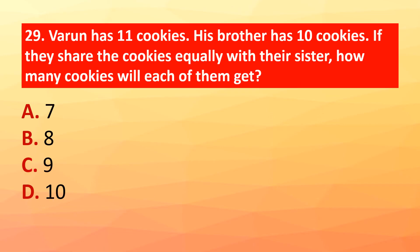Question 29: Baroon has 11 cookies and his brother has 10 cookies. If they share the cookies equally with their sister, how many cookies will each of them get? The correct answer is option A: 7.